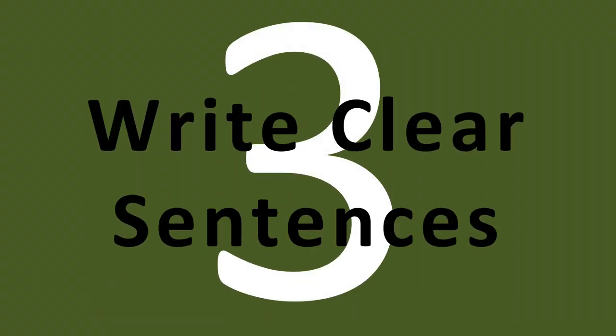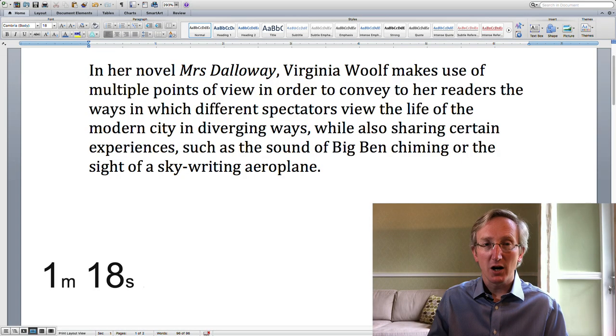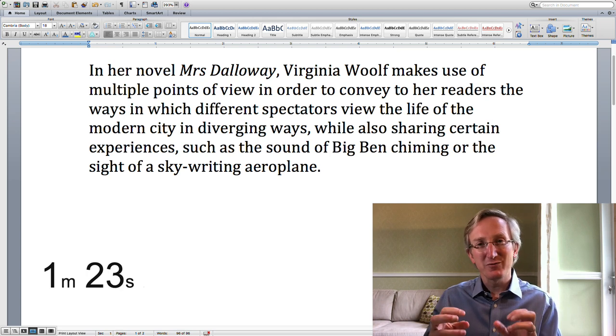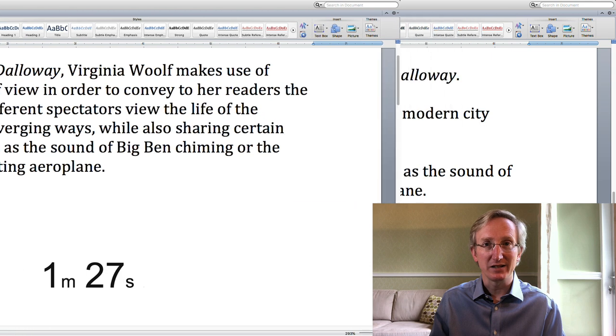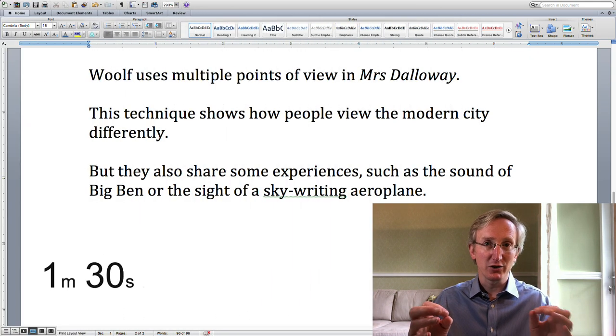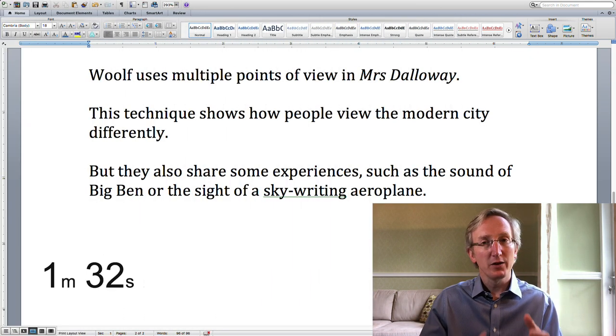Tip number three: write clear sentences. Don't let your sentences just go on and on, piling up different clauses separated by commas. Make your reader's life easy by writing in shorter, clear, simple sentences. If you've got a long sentence it's really difficult to read and there are probably two or even three different ideas in it. Split it up and make it three different sentences — that will be much easier for your reader to grapple with.